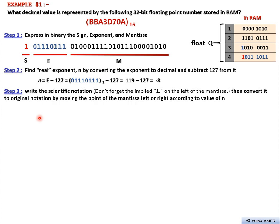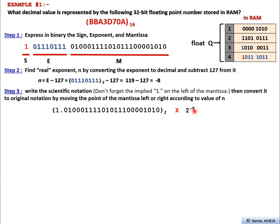In step 3, we write the scientific notation — don't forget the implied one — and then convert to original notation. We move the decimal point of the mantissa either left or right according to the value of n. We put the point and implied one, and multiply by 2 to the power of minus 8, which came from subtracting 127 from the decimal value of our exponent.